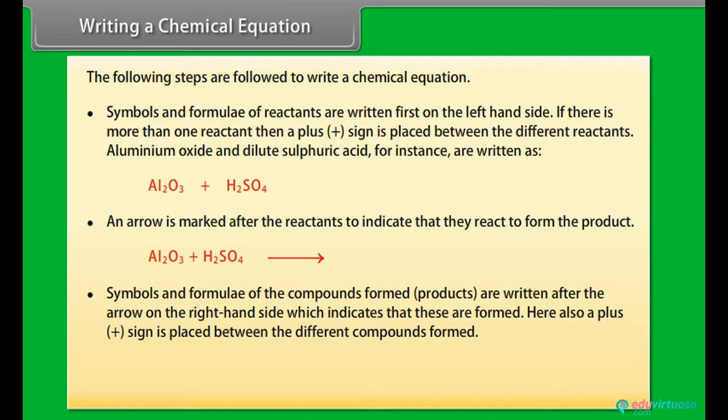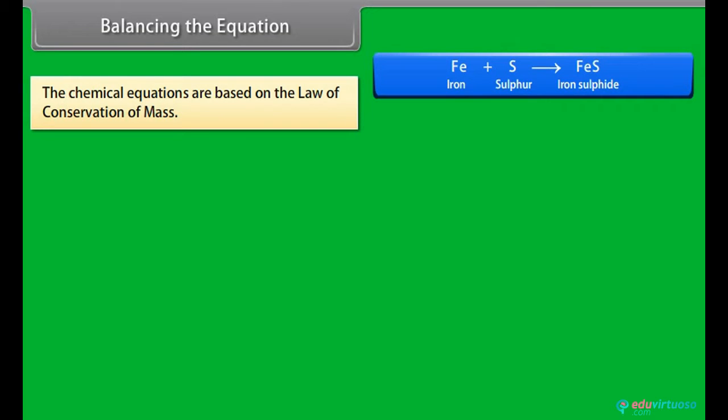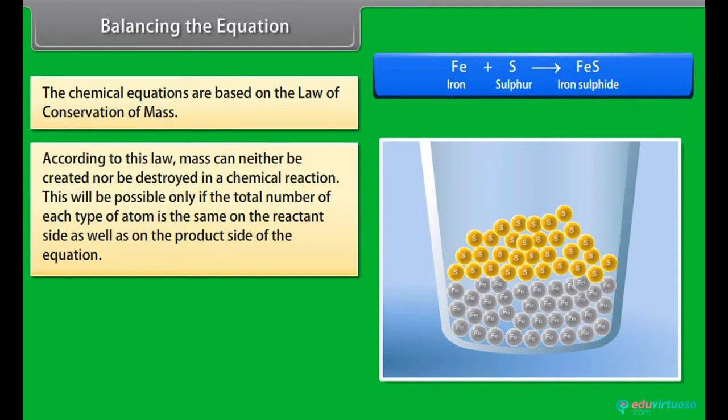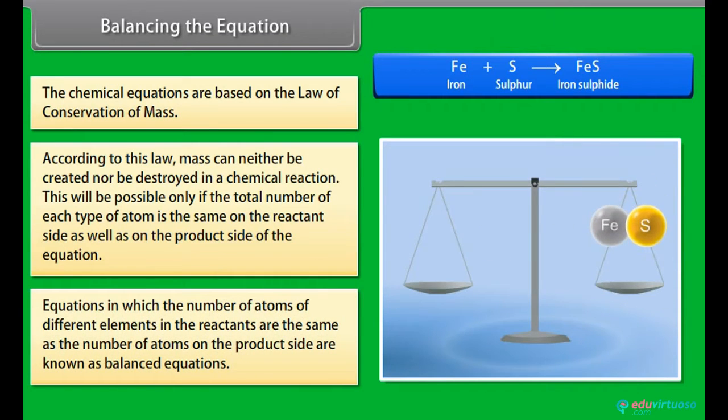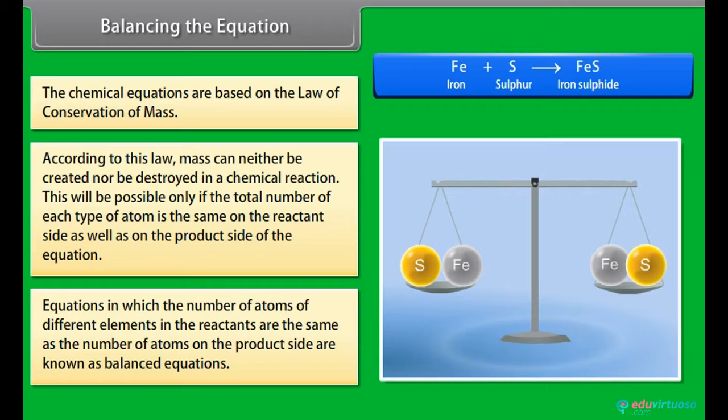Balancing the equation: The chemical equations are based on the law of conservation of mass. According to this law, mass can neither be created nor be destroyed in a chemical reaction. This will be possible only if the total number of each type of atom is the same on the reactant side as well as on the product side of the equation. Equations in which the number of atoms of different elements in the reactants are the same as the number of atoms on the product side are known as balanced equations.